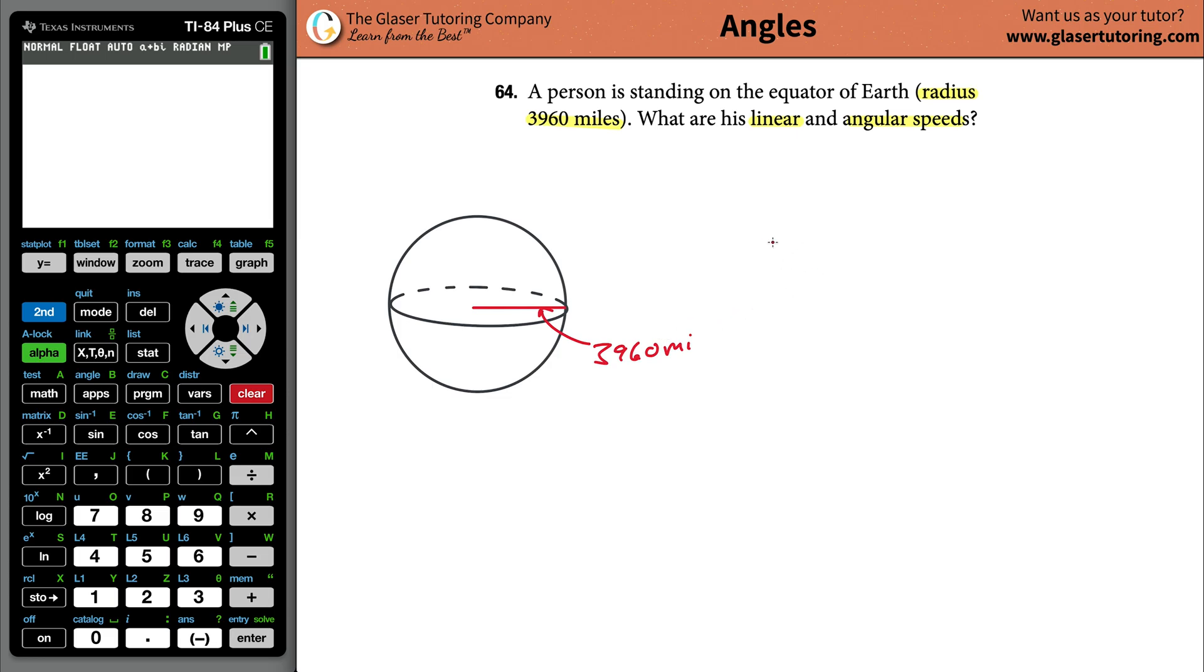So whenever you want to find the linear speed of something and it's moving in a circle, you're going to take the circumference, hopefully I spelled that right, and then you divide it by the time over which it took to travel that circumference.